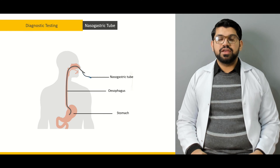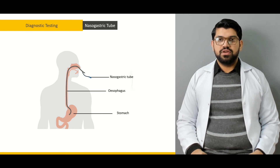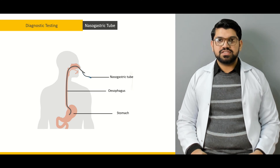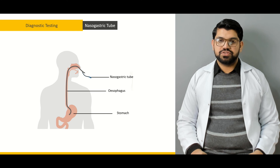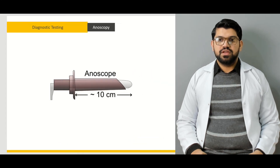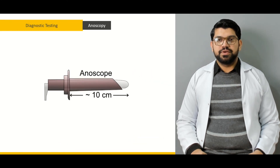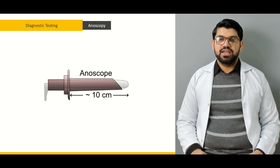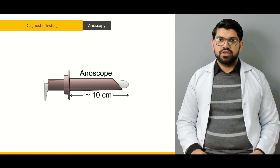Next would be the significance of the nasogastric tube — how to insert it and what its significance is. Next would be proctoscopy — what proctoscopy is, its dimensions, its significance, and what procedures can be done with it.